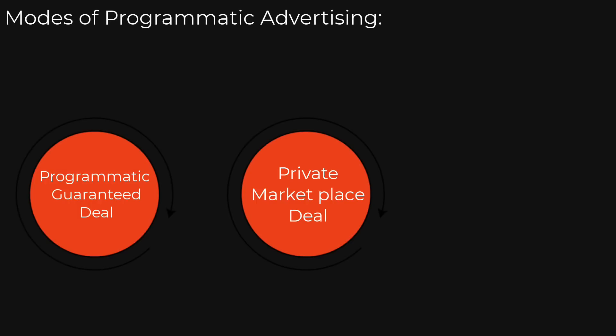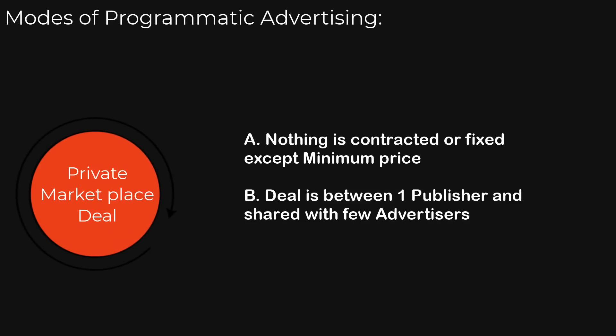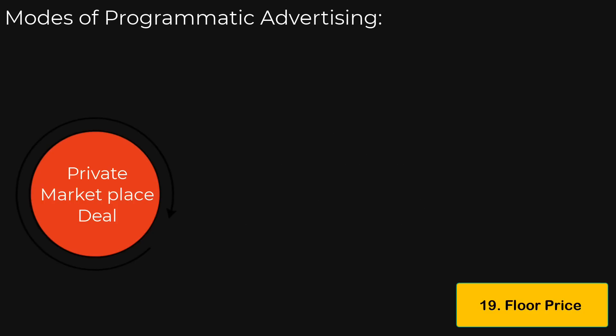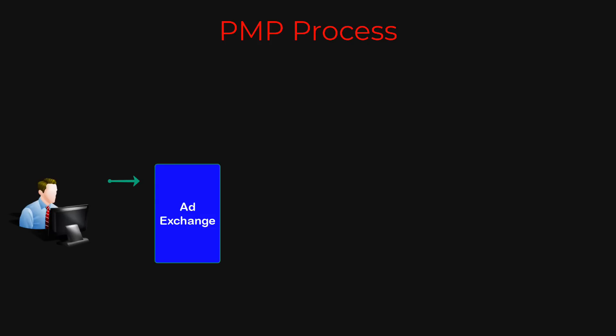This type of deal is called a PMP, or private marketplace. Generally the publisher makes these ad slots available to many advertisers and anticipates that at any given point one of them bids and buys. Publishers want to sell most of their inventory through programmatic guarantee deals because it gives them an idea of how much inventory is already sold, and the prices are higher. But if they can't sell through programmatic guarantee, the leftover inventory is sent in packages to multiple advertisers — perhaps 5, 10, or 20 — who can buy at any given time.